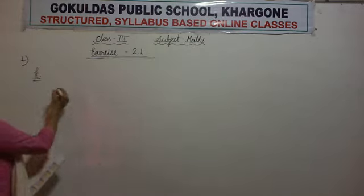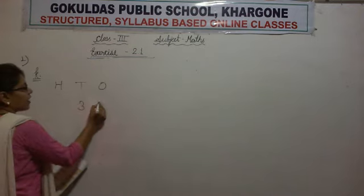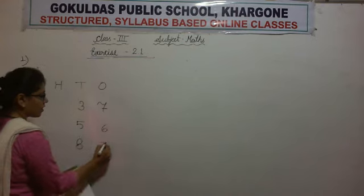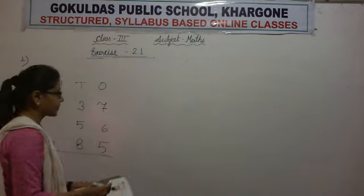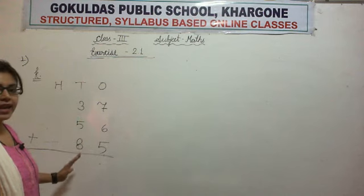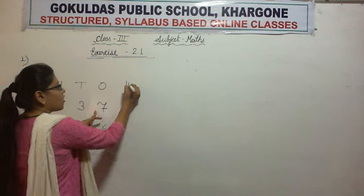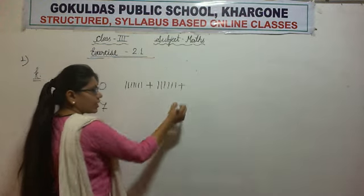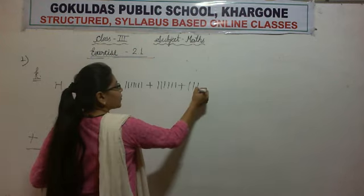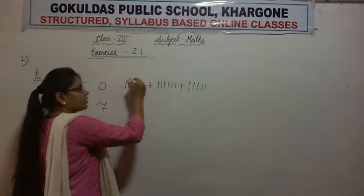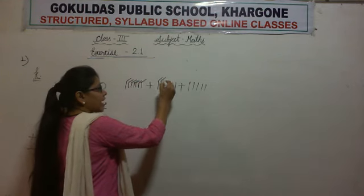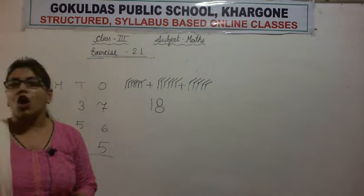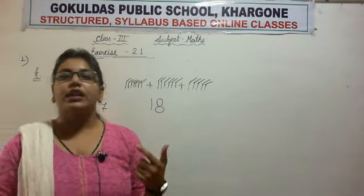Now part K. Again we write 100's, 10's, and 1's columns. The numbers are 37, 56, and 85. We add 1's first: draw 7 sticks, plus 6 sticks, plus 5 sticks. Let us count: 1 through 18. Again we got a 2-digit answer, so we regroup 18 — we write 8 below the 1's column and carry 1 to the 10's column.